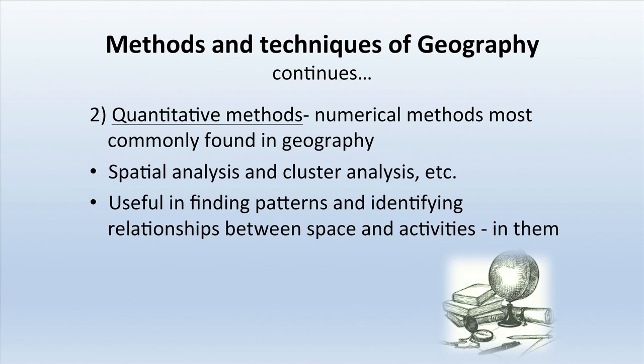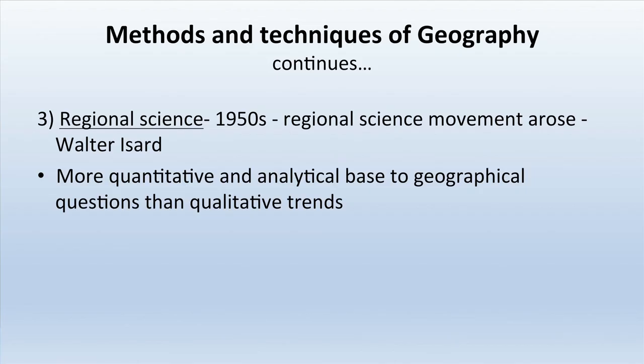The second method is the quantitative method. Numerical methods are widely used in geography — for example, spatial analysis and cluster analysis — and are useful in finding patterns and identifying relationships between space and activities. The third method is regional science, which emerged during the 1950s when the regional science movement arose, started by Walter Isard. It provides a more quantitative and analytical base to geographical questions. Both quantitative and qualitative aspects supplement and complement each other.